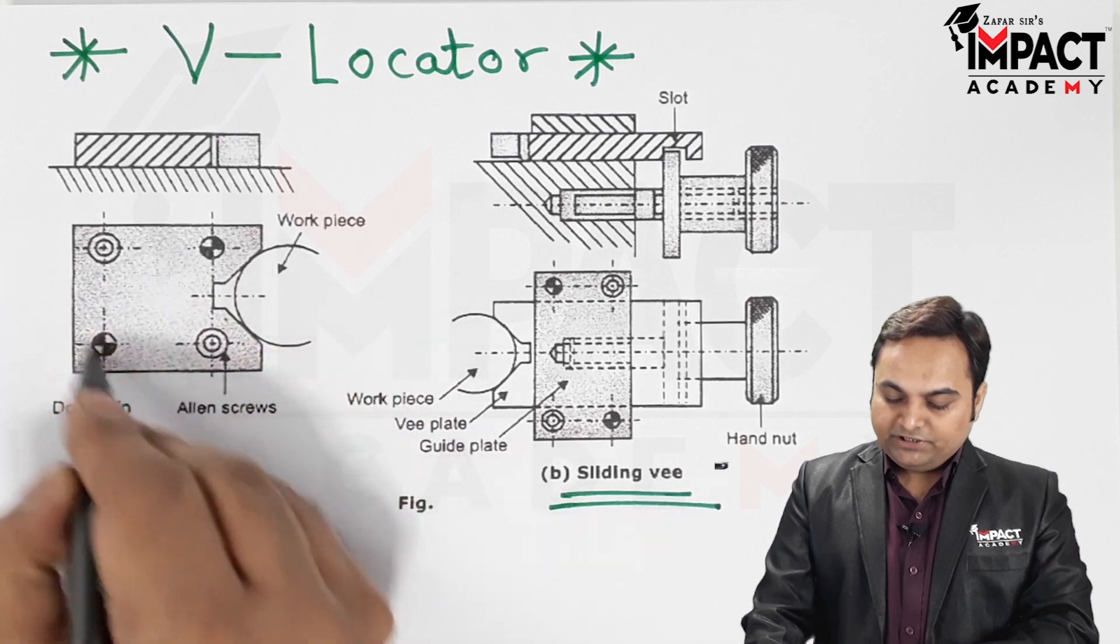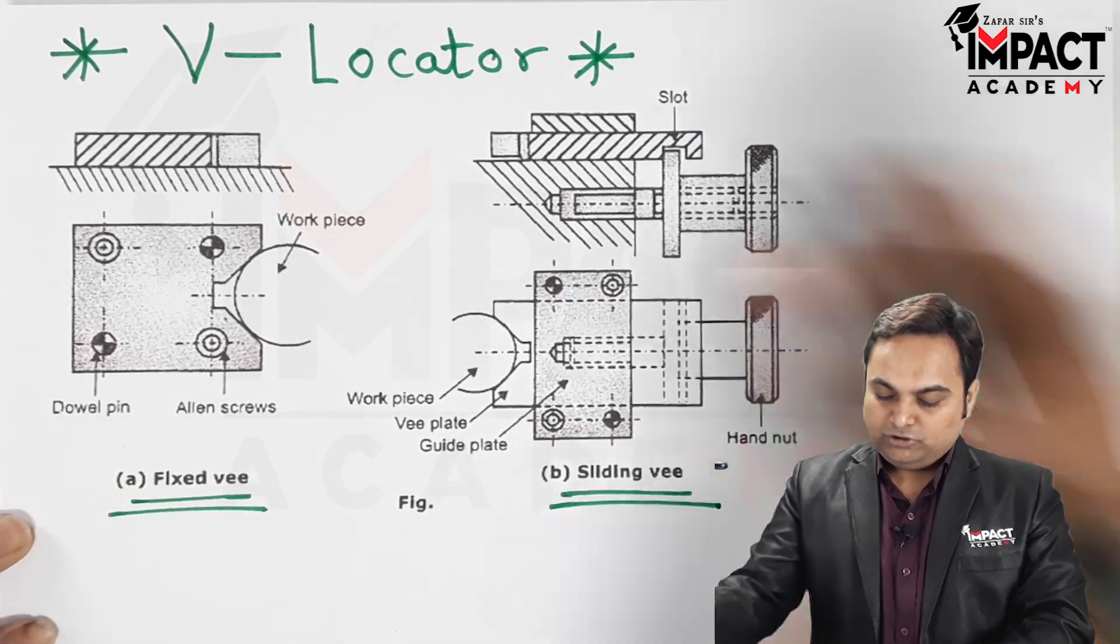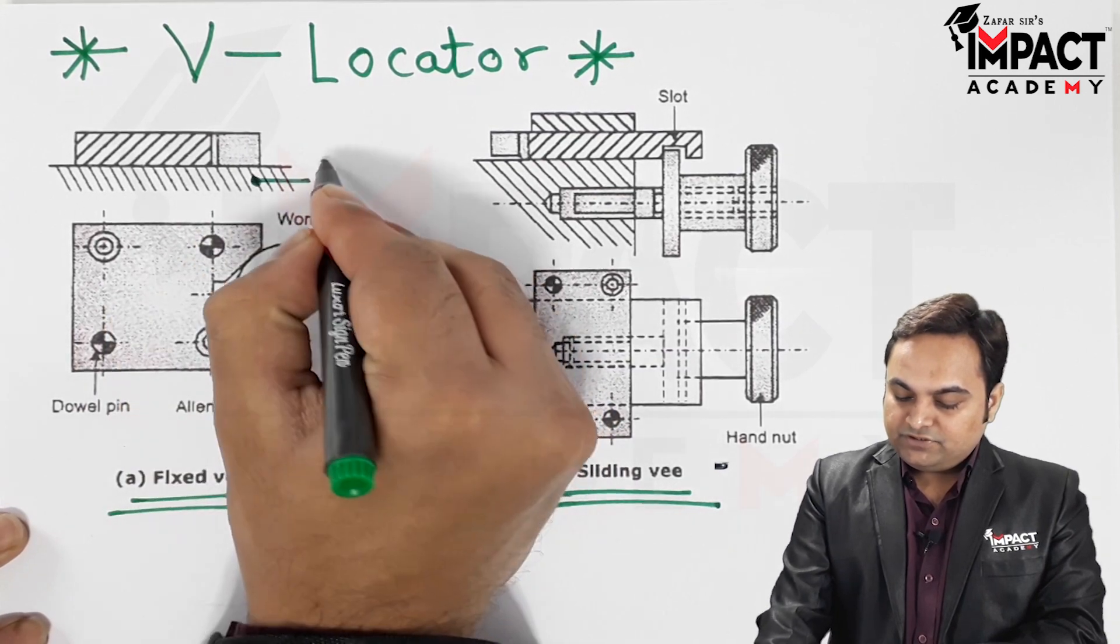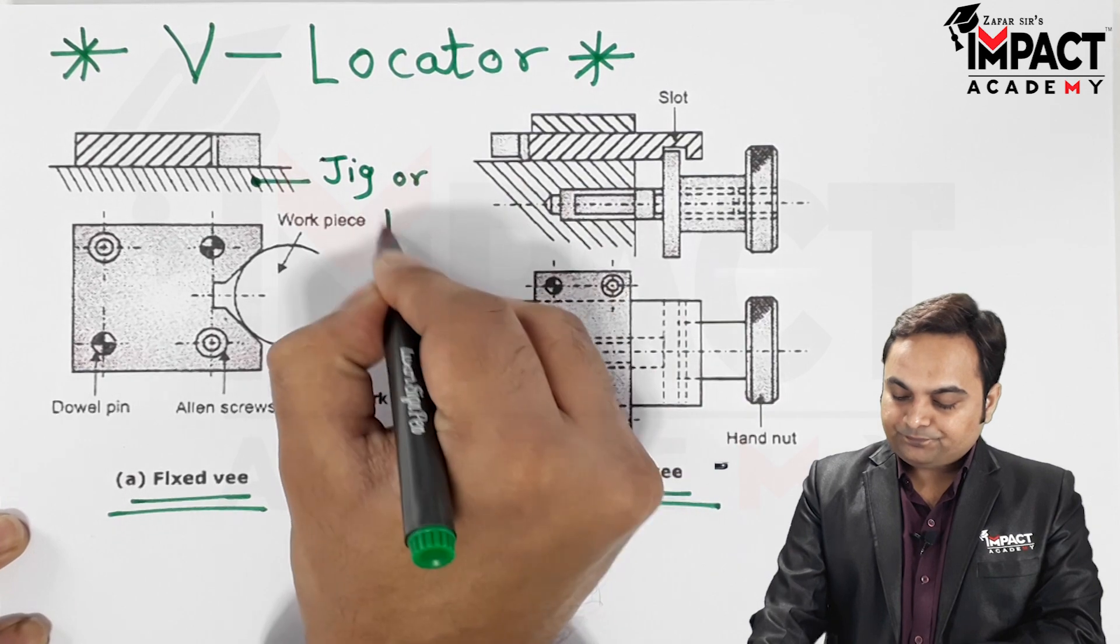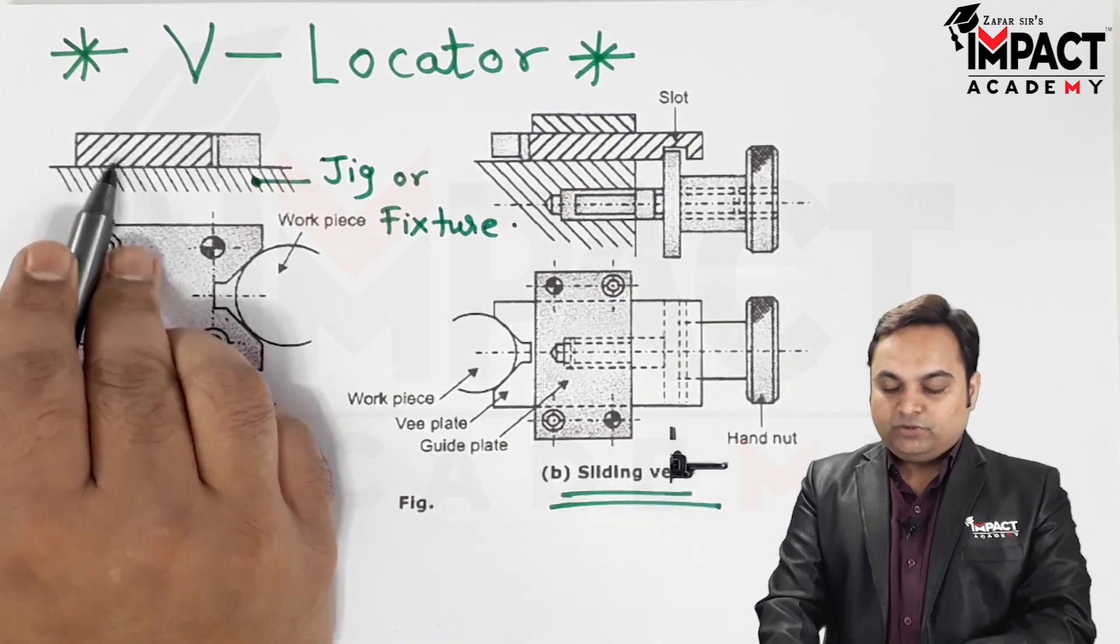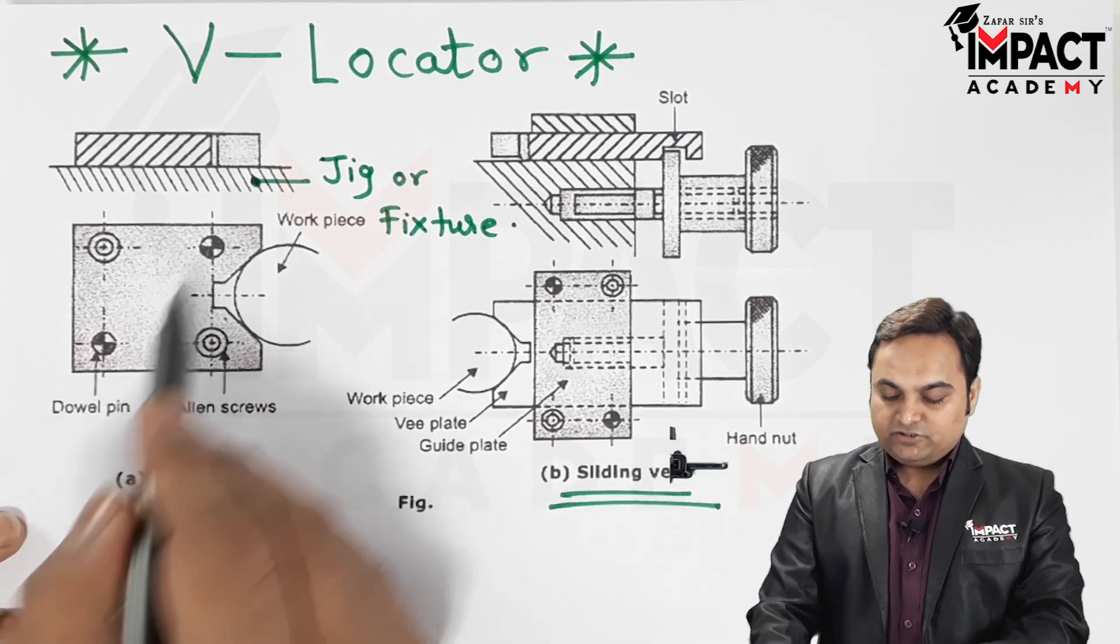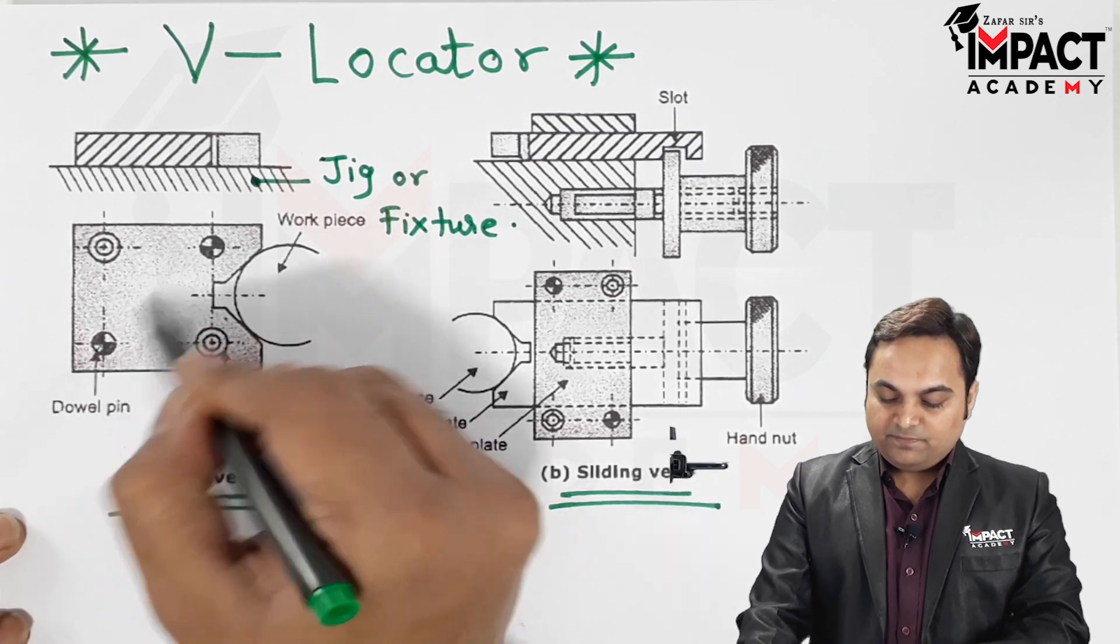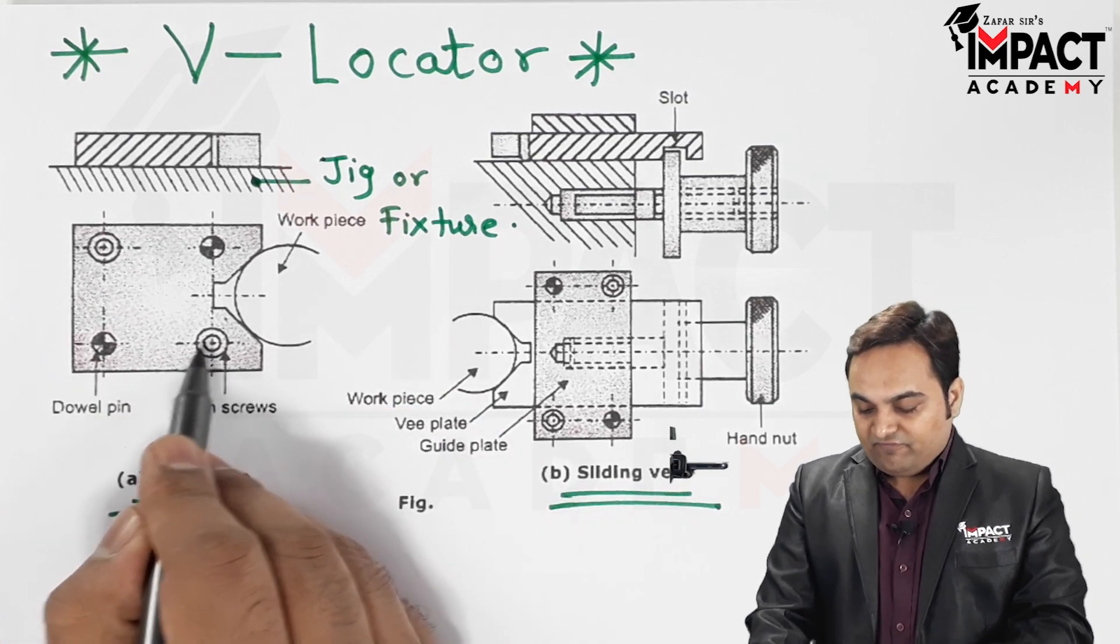At the bottom, what we are having here is the jig or the fixture body. So the locator is fixed inside the jig or fixture body, and it is located with the help of these dowel pins. Allen screws are provided in order to fasten or to remove this V-locator from the jig or fixture body.